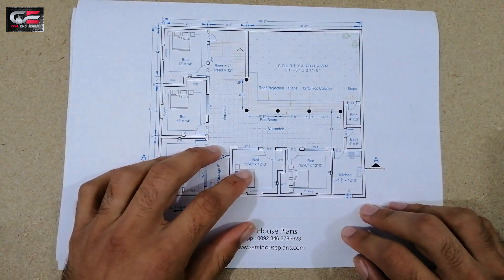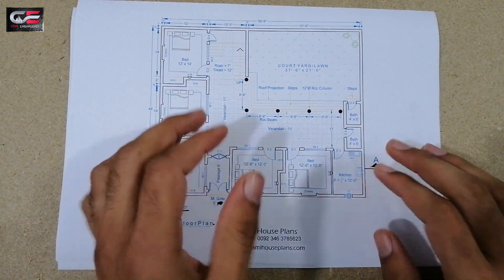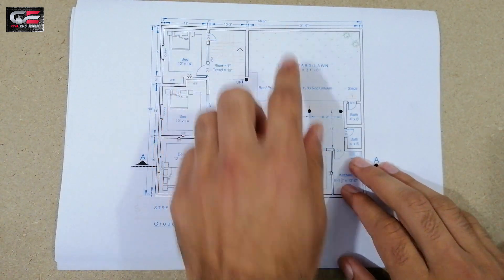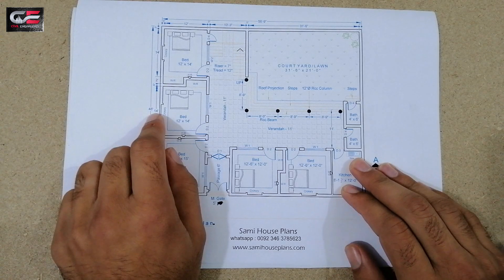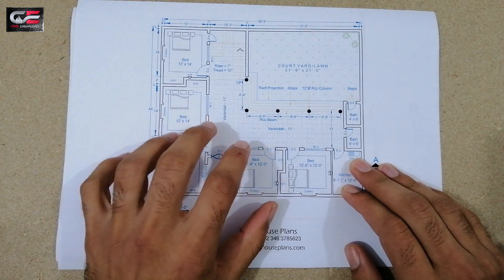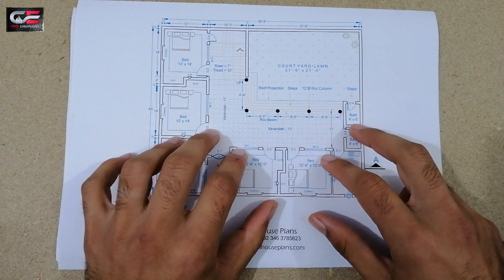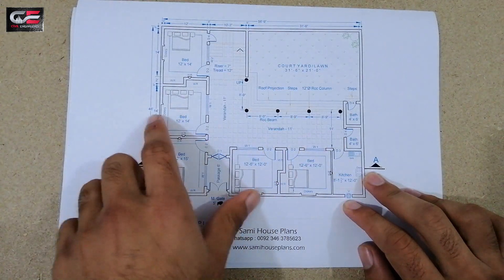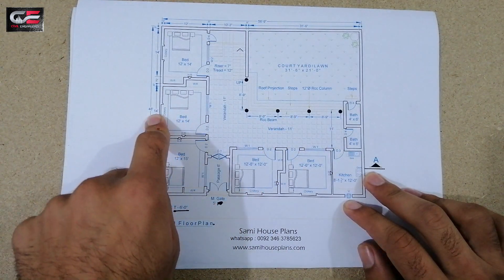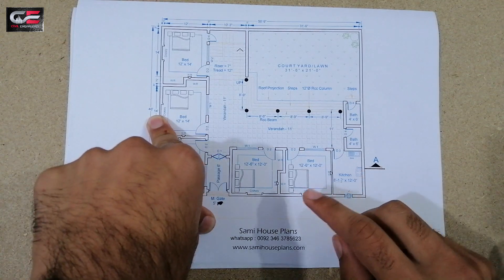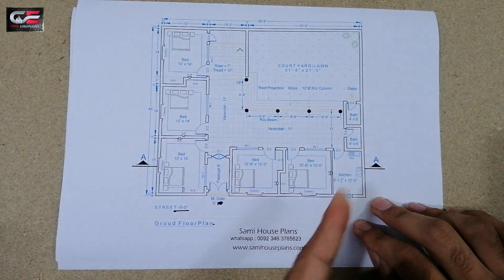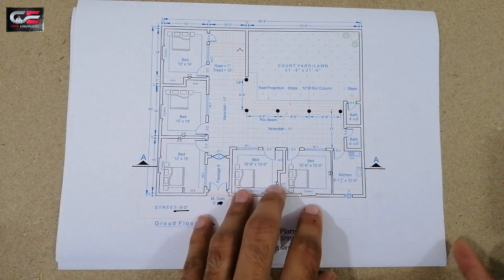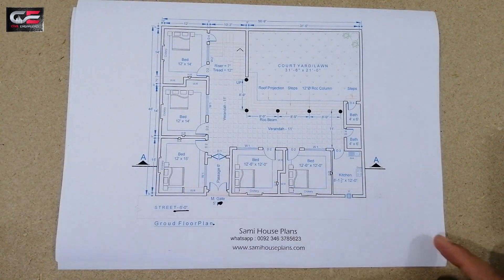Assalamualaikum guys, welcome back to Civil Engineers Tube channel. In this video I'll teach you how to design a plan in 56 feet 9 inches by 48 feet. This is designed for one of my clients. This is the ground floor for the house plan, and the second one is its first floor.